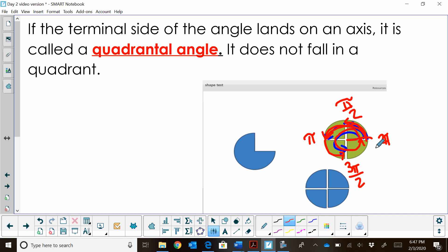Now that's quadrantal. Now this position at two pi also can be called zero if there's no angle rotation at all. So those positions are all considered quadrantal angles.